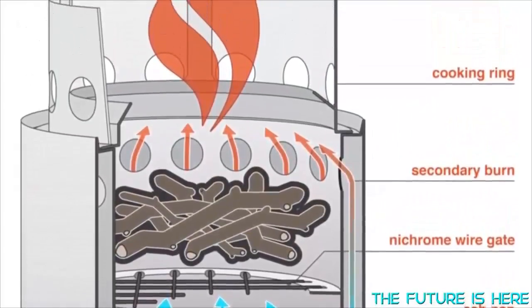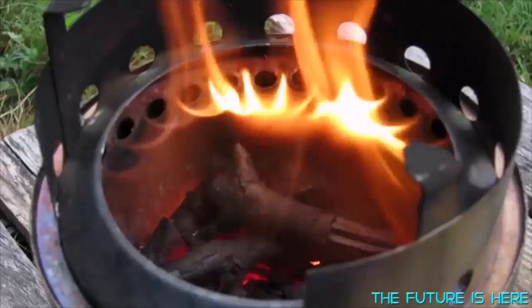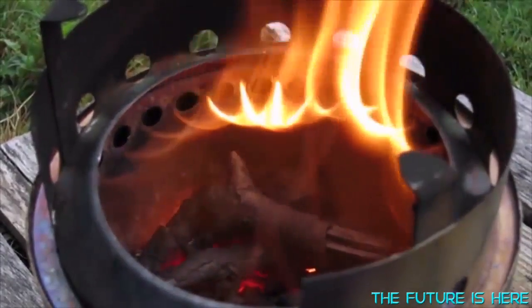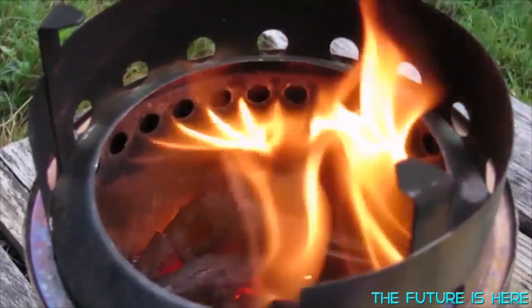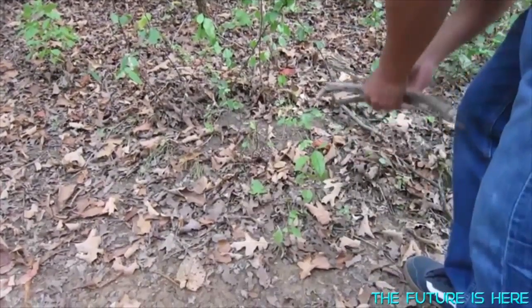This preheated air feeding back into the fire through the smaller holes at the top of the stove causes a secondary burn. This allows the fire to burn more completely, which results in a more efficient fire with very little smoke. A more efficient burn also means you'll use much less wood compared to an open campfire.